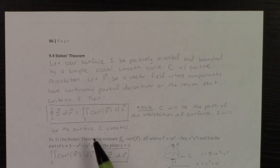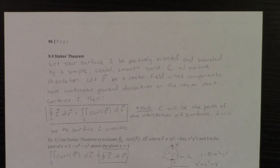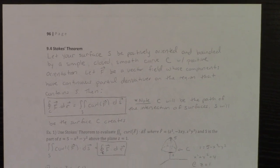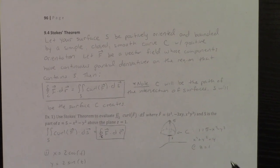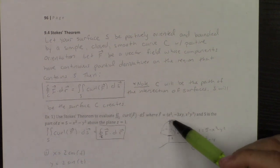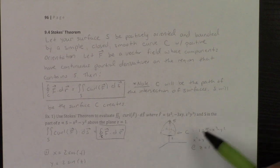Because it says use Stokes' Theorem to do the double, I am going to do the single. Now, if I'm going to do the single integral, I need a path C. You've got to figure out what that path C is. Well, that path C is going to be the intersection between your surfaces.